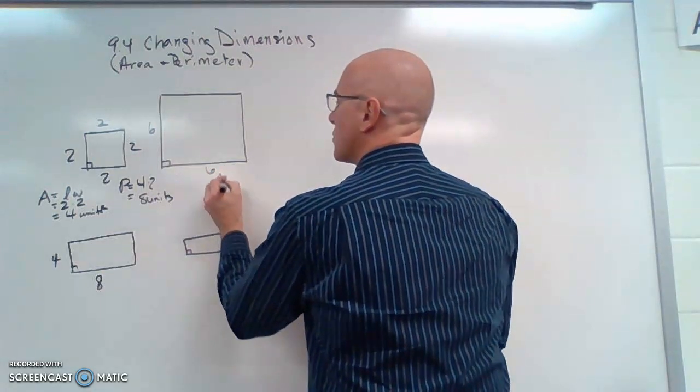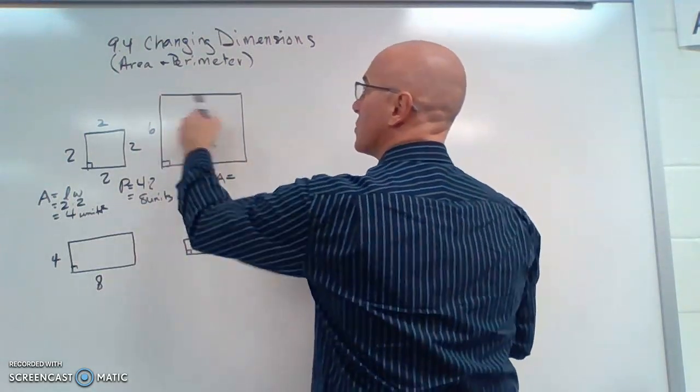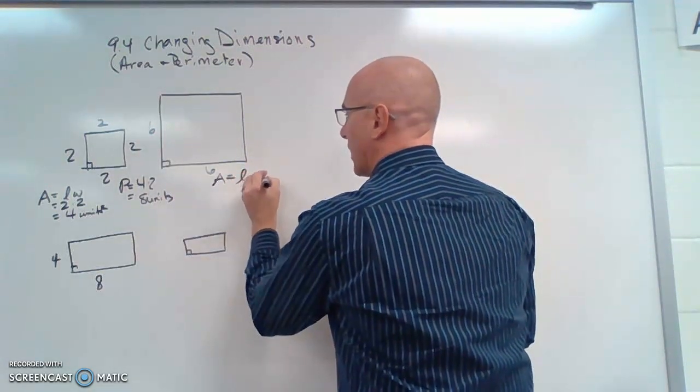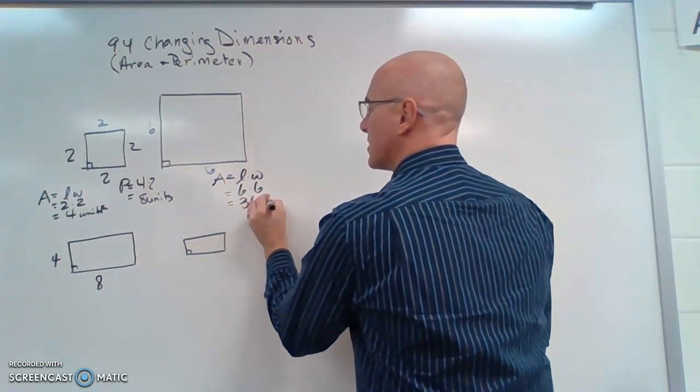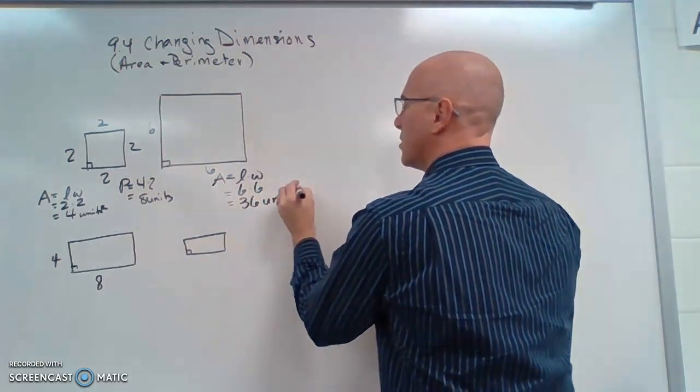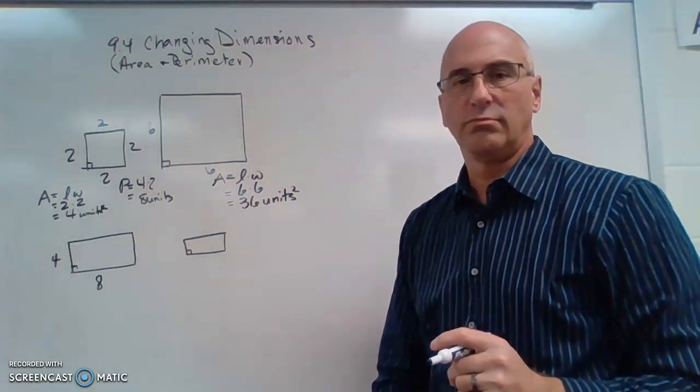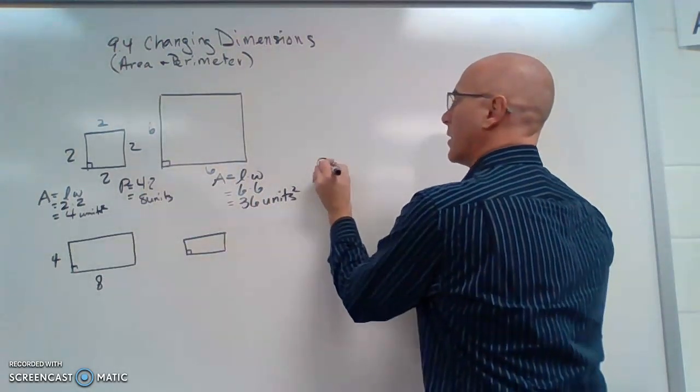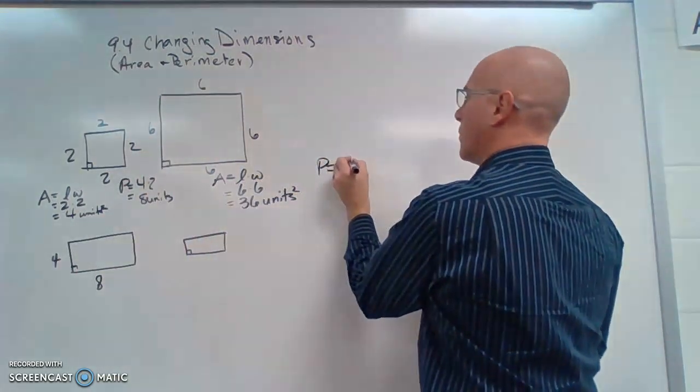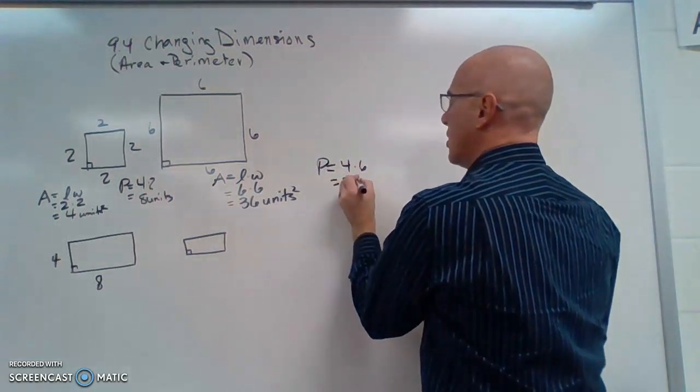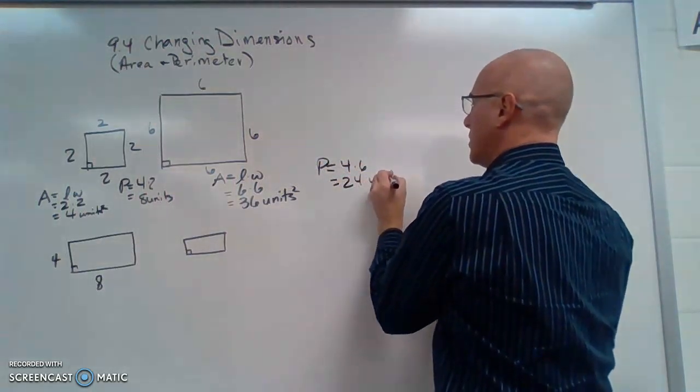Let's look at what happens with the area. It is the length times the width, so it's 6 times 6. This is now 36 units squared. Let's look at the perimeter. We know it's a square, the distance around, so it's 4 times 6, which is 24 units.